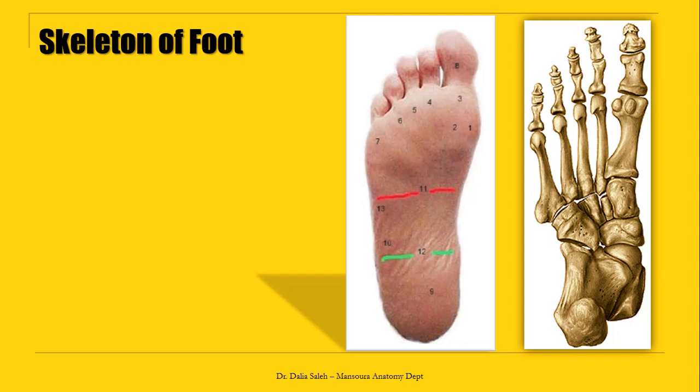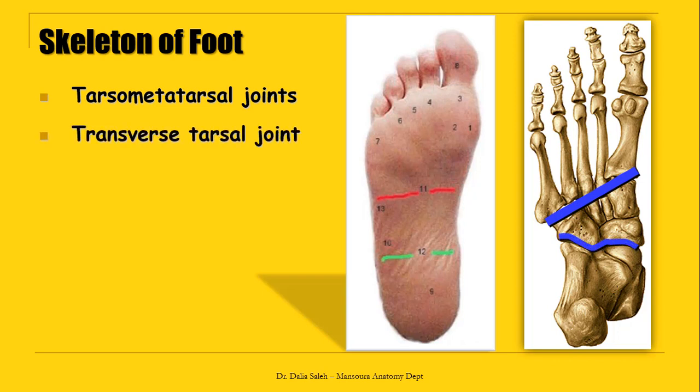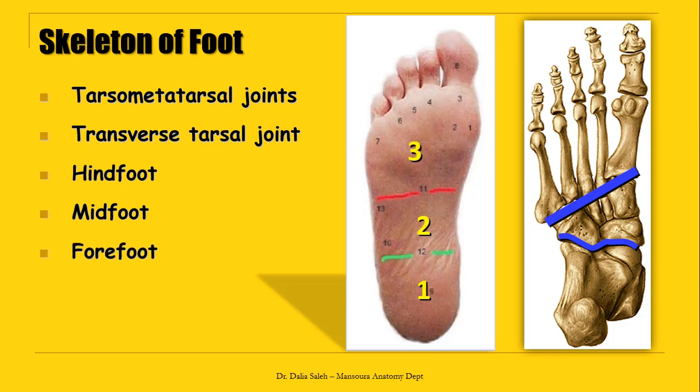The skeleton of the foot is formed of three sets of bones: the tarsals, the metatarsals, and the phalanges. The tarsal-metatarsal joints and the transverse tarsal joint divide the foot into three parts: the hindfoot, whose skeleton is made by the calcaneus and the talus; the midfoot, made by the mid-tarsal bones — the navicular, cuboid, and the three cuneiforms; and the forefoot, made by the five metatarsals and the phalanges.